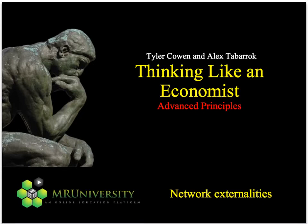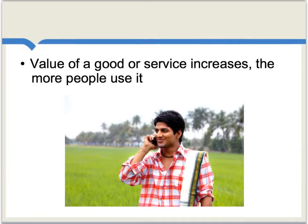Today, let's do a brief overview of a very important general concept known as network externalities. The basic idea is that the value of a good or service increases the more people use it. For instance, if you're the only person in the world with a telephone, it's not actually worth very much. The more that other people have phones, the more people you have to call and text. When it comes to other tech standards, this issue can take many different and often subtle forms.